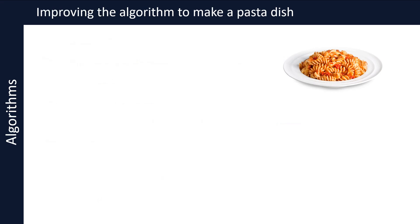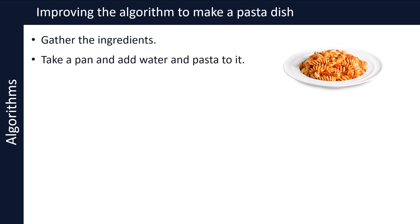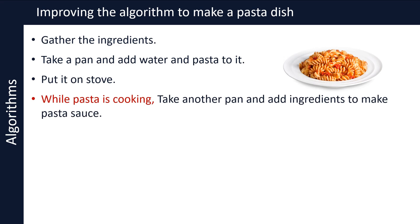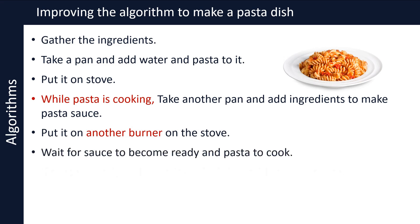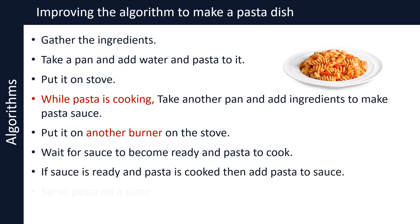Let's see if we can improve this pasta dish algorithm. The steps start the same: gather the ingredients; take a pan, add water and uncooked pasta, and put it on the stove. But now, while the pasta is cooking, take another pan and add ingredients to make pasta sauce, and put that on another burner on the stove. So now you have two things cooking simultaneously. Wait for both the sauce and the pasta to be ready; then add the pasta to the sauce — your pasta dish is now ready. Our second algorithm is better because we save time by cooking the pasta and sauce simultaneously, making it more efficient than the first algorithm.